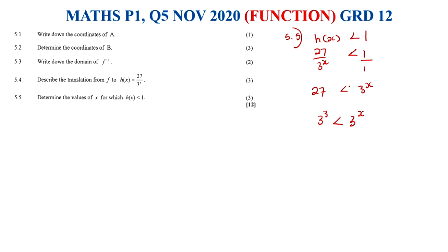Therefore if the bases are the same, we would drop the exponent, 3 less than x. Therefore x is greater than 3. And that's how you would deal with question 5.5.